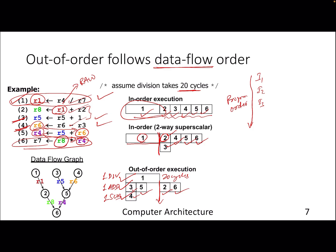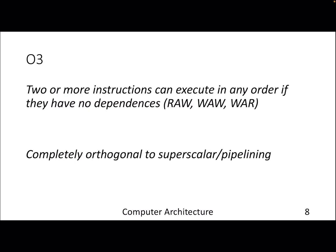We can start instruction six after instruction two completes, because there is a dependency between instructions two and six. This is out-of-order execution — as long as we have multiple execution units (ALU, adder, subtractor, divider) and instructions are independent, we execute them out of order. This applies only to the execute stage, not fetch or decode. The goal: if there are no dependencies leading to hazards, two or more instructions can execute in any order. This idea is orthogonal to superscalar or pipelining but in commercial machines it is coupled with superscalar, where fetching multiple instructions per cycle further improves IPC.